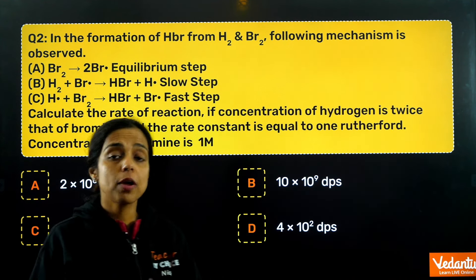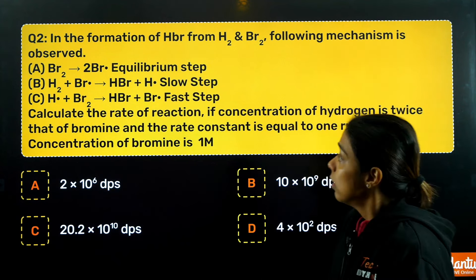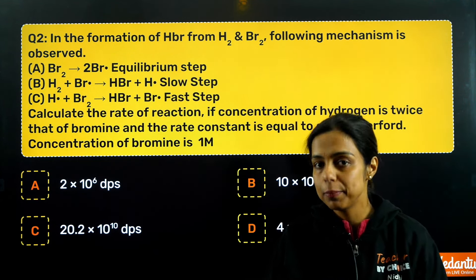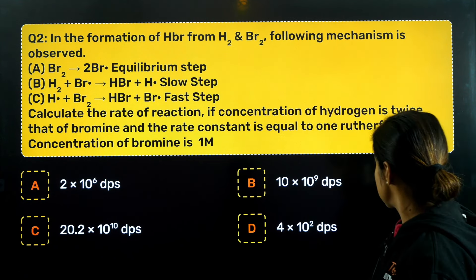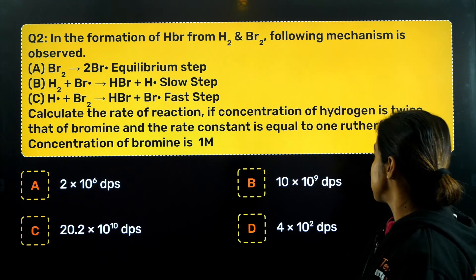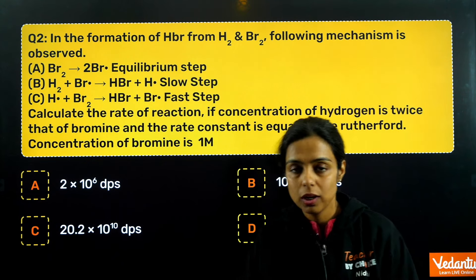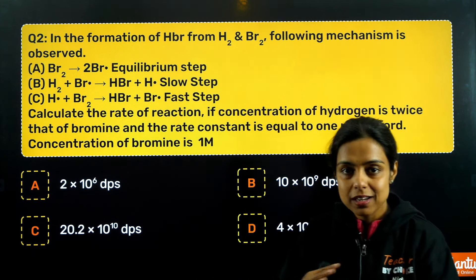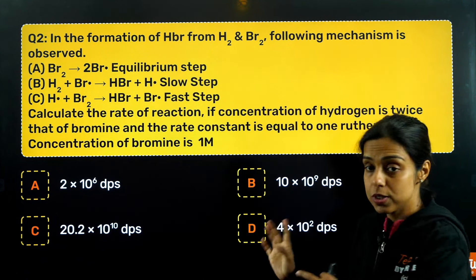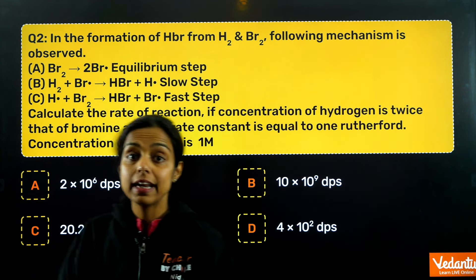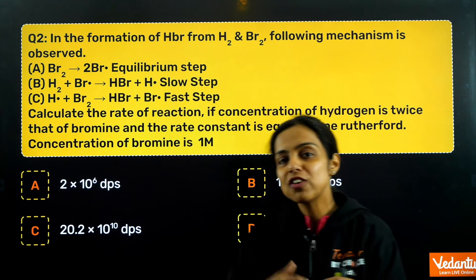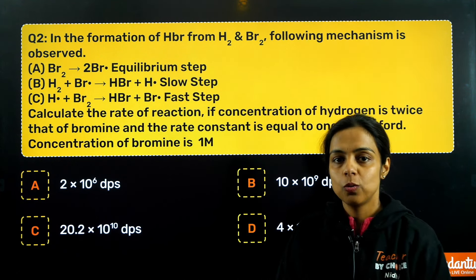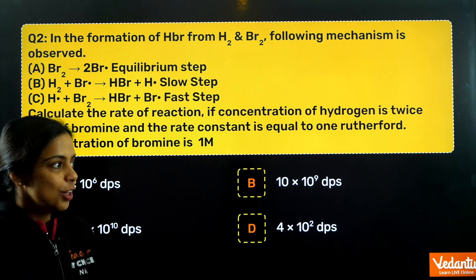Let's move on to the next question, which is from chemical kinetics. In the formation of HBr from H₂ and Br₂, a specific mechanism is observed. You need to calculate the rate of reaction if the concentration of hydrogen is twice that of bromine, the rate constant is equal to one Rutherford, and the concentration of bromine is one molar. You need to know that one Rutherford equals 10⁶ DPS (disintegrations per second).